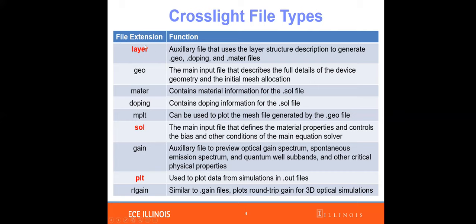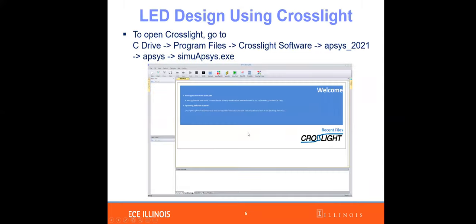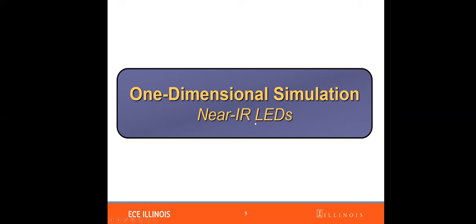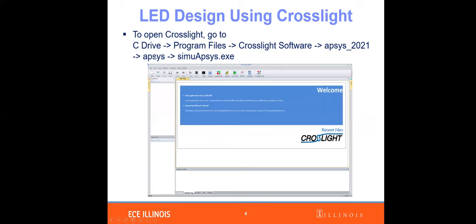The layer file is used to define your device structure. Here we are going to talk about 1D LED simulation emitting in the near-infrared spectrum, using aluminum gallium arsenide as a material. First, you open CrossLight under C drive, Program Files, CrossLight software, EPSYS 2021, EPSYS, simuepsys.exe.